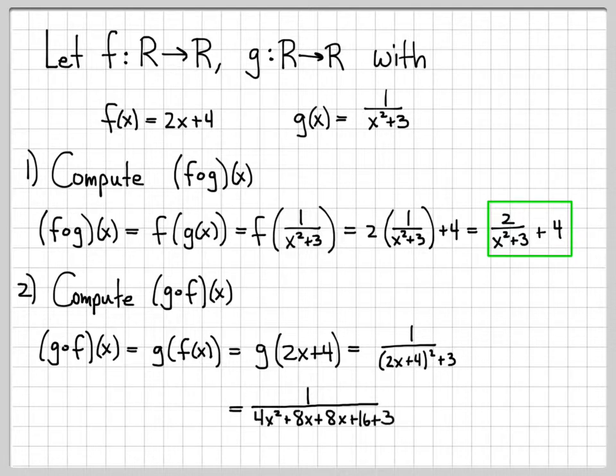So instead of 2x plus 4 squared, we could write that as 4x squared plus 8x plus 8x plus 16 plus 3. And then combine these terms a little bit to end up with 1 over 4x squared plus 16x plus 19 as our answer. So it's a pretty simple problem. Just a few concrete examples of how you compute the composition of functions.